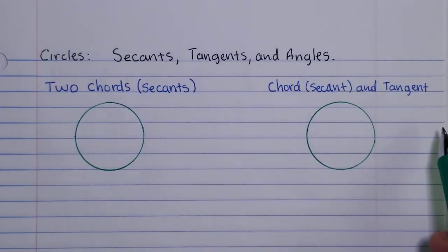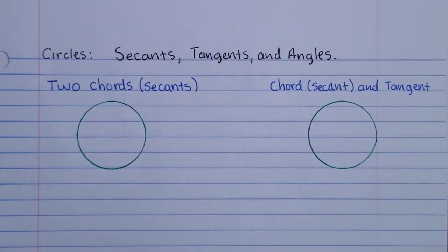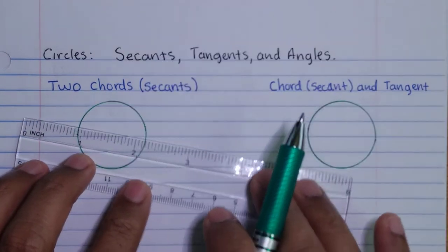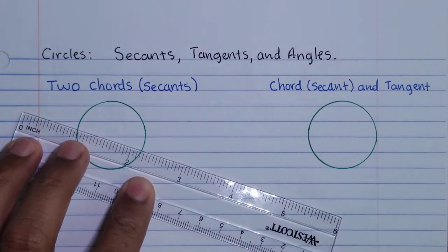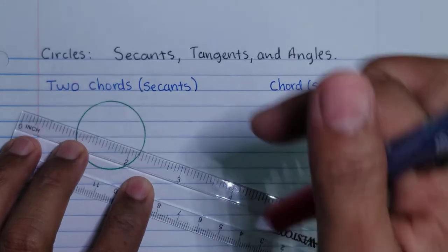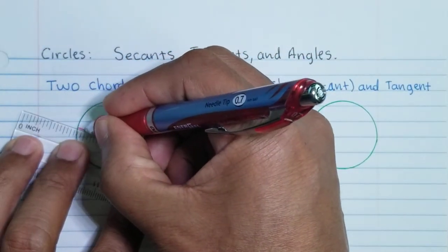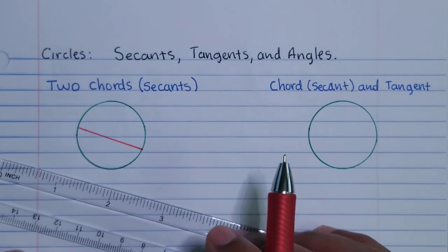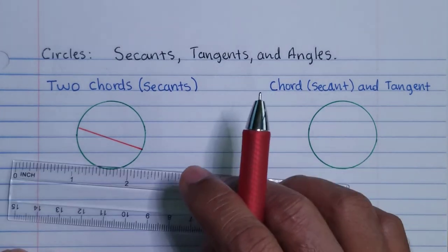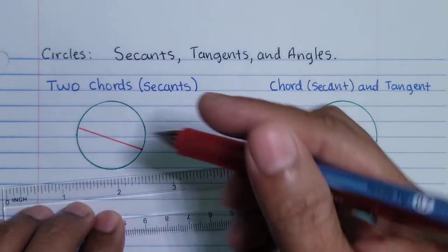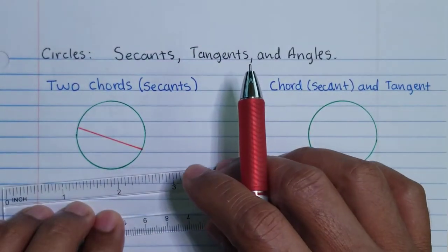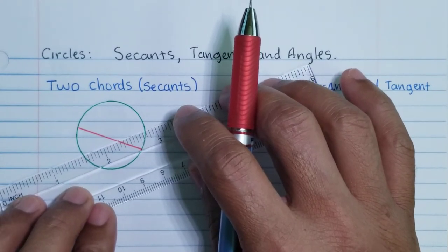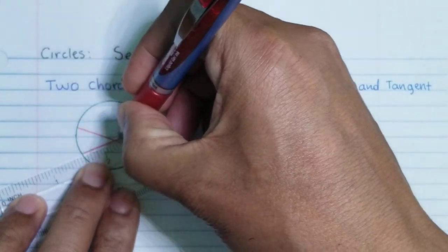Let's start with two chords. I'm going to use a ruler and draw two chords. A chord is just a segment with two endpoints on the circle. It doesn't have to be a diameter, but a diameter is a chord — the only difference is that a diameter passes through the center point of the circle. So this one is a chord, and here is another chord.